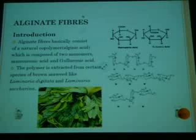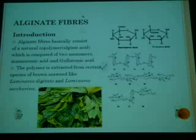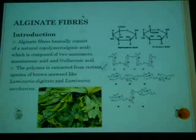Now the alginate fibers — what are alginate fibers? Alginate fibers basically consist of a natural co-polymer which is usually alginic acid. This alginic acid is composed of two monomers: one is mannuronic acid and the second is guluronic acid. This polymer is extracted from certain species of seaweed, and the proportion of these two acids in the polymer may vary depending on the type of species.